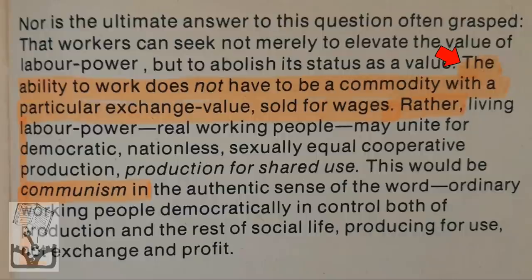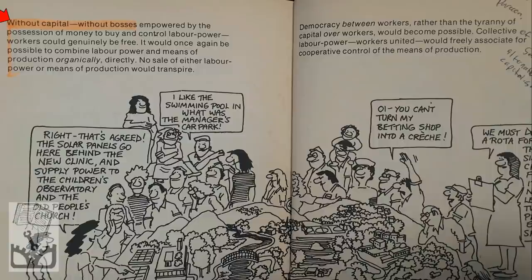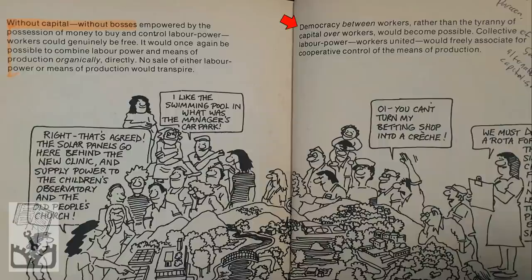Ordinary working people, democratically in control both of production and the rest of social life, producing for use, not exchange and profit. Smith and Evans conclude: 'Without capital, without bosses empowered by the possession of money to buy and control labor power, workers could genuinely be free. It would once again be possible to combine labor power and means of production directly. Democracy between workers, rather than the tyranny of capital over workers, would become possible. Collective labor power — workers united — would freely associate for cooperative control of the means of production.'